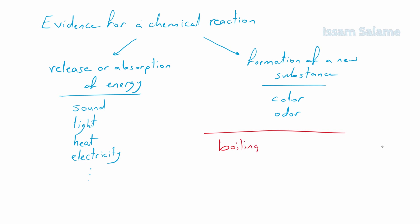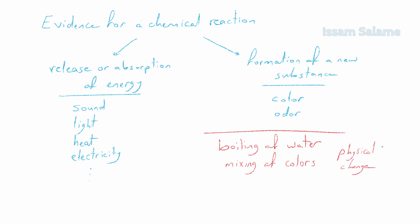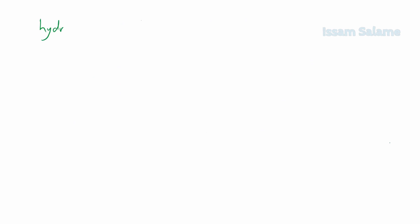Formation of a new substance can be detected by its color or other properties. Always keep in mind that a chemical reaction should produce a new substance. For example, boiling water produces water vapor, but that is not a new substance since we can return it back to water. Also, mixing colors may give a new color, but that is not a new substance. A new substance should have new properties like color, density, melting point, and boiling point. These changes are physical changes.